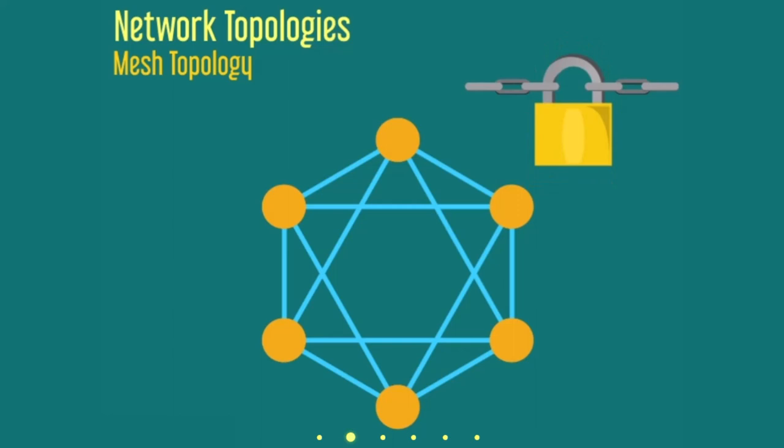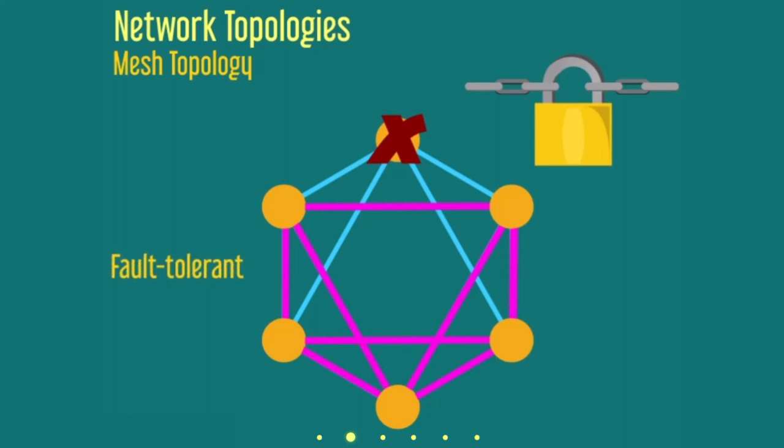Since all of the nodes are connected, there is always another link available for use if one of them fails. Because alternate links are always available, this network is the most fault-tolerant topology available.